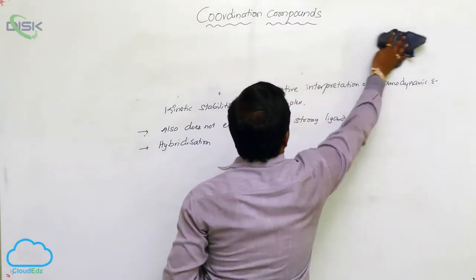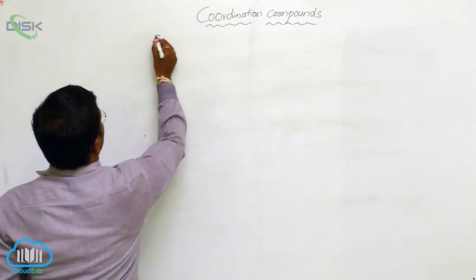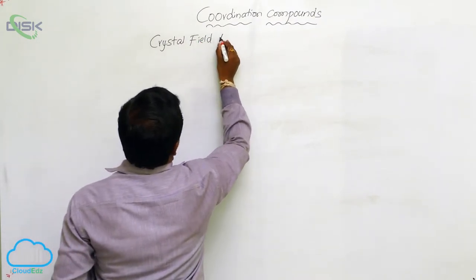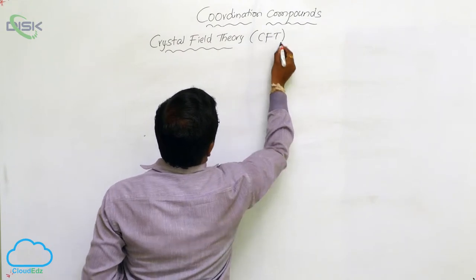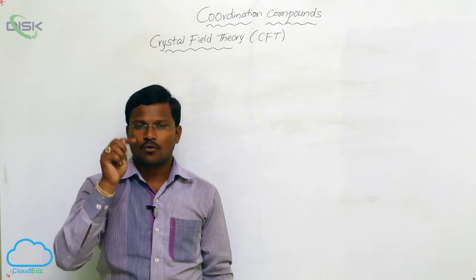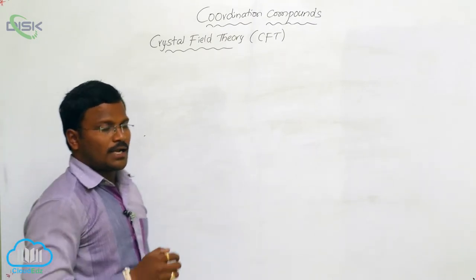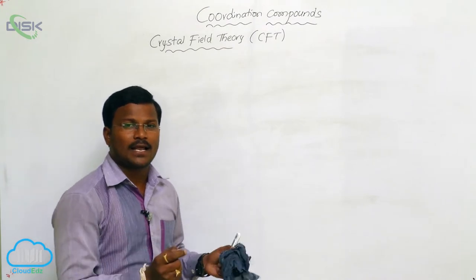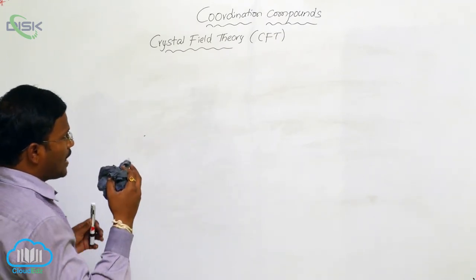To overcome these drawbacks, we introduce the next theory: Crystal Field Theory (CFT). Crystal Field Theory explains the formation of coordination complexes. We will explain the formation of four-coordinate and six-coordinate metal complexes with the help of CFT, which depends upon the splitting of d orbitals present at the central metal ion or metal atom in the presence of ligands.